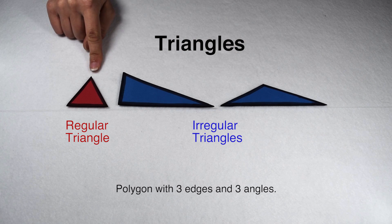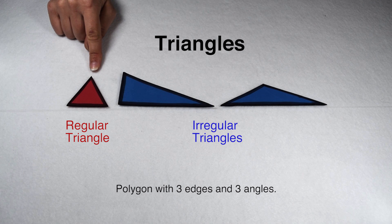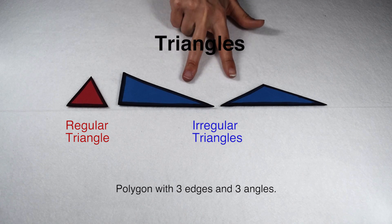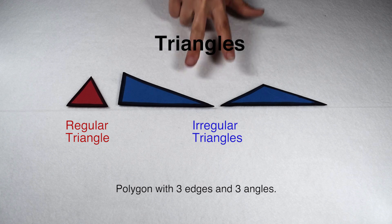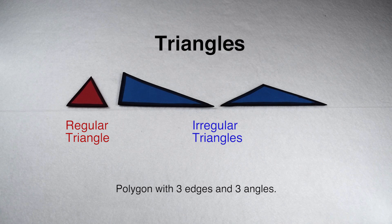The equilateral triangle would be considered our regular triangle because it has all equal sides and all equal angles. All other triangles would be classified as irregular because they have different side lengths, different angle measures, or both.